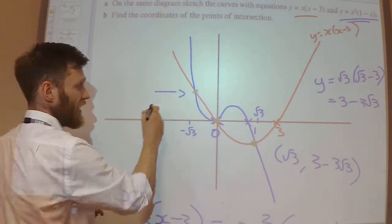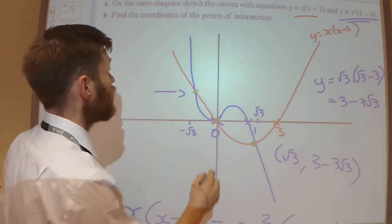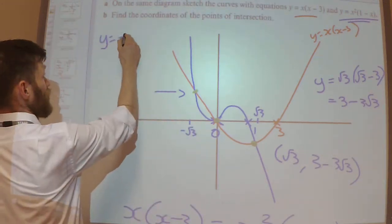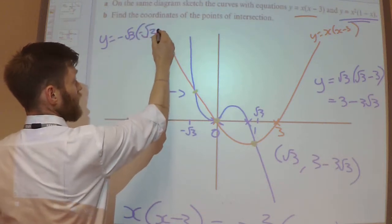And this coordinate over here, we need to substitute -√3 in now. So y = (-√3)(-√3-3).